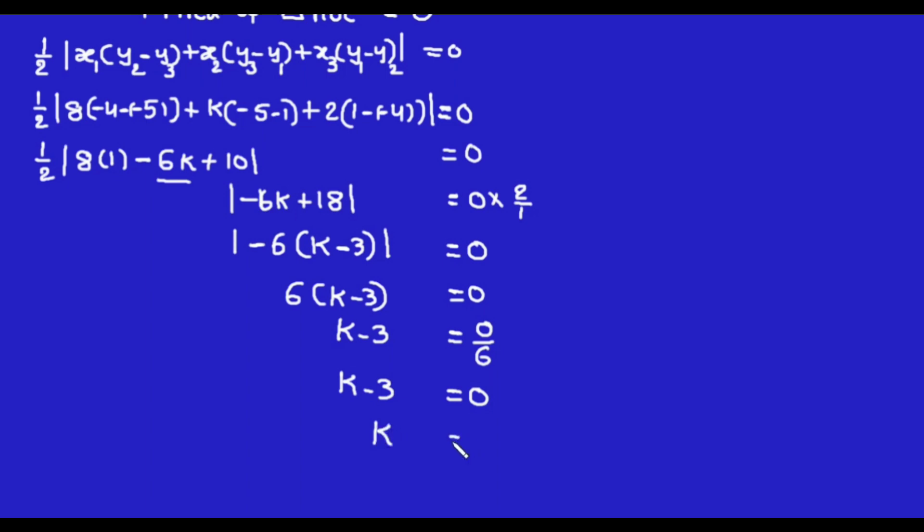Now move -3 to the right-hand side. Then we will get k = 3. Therefore, k is equal to 3.